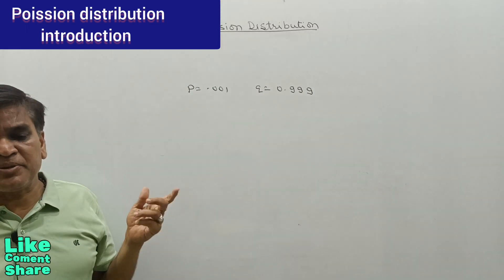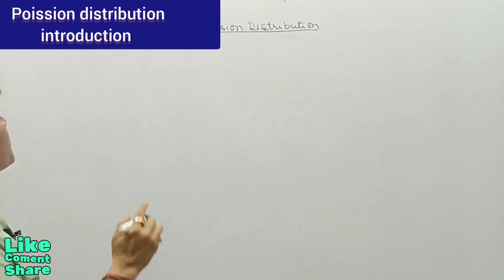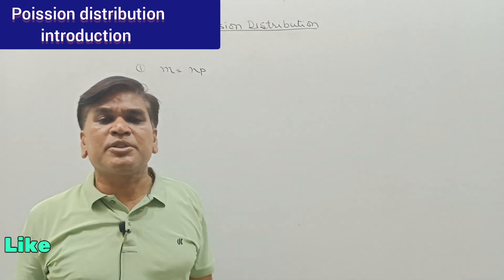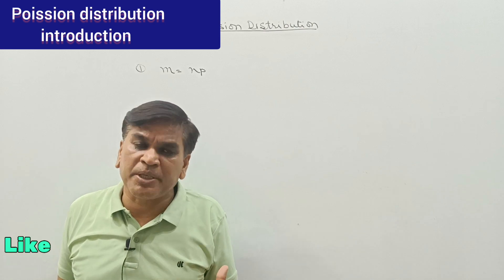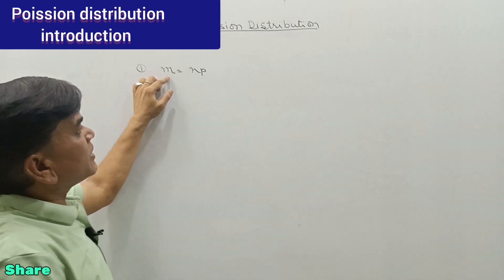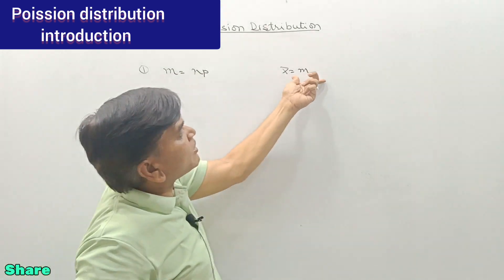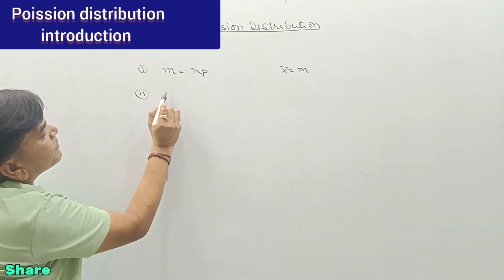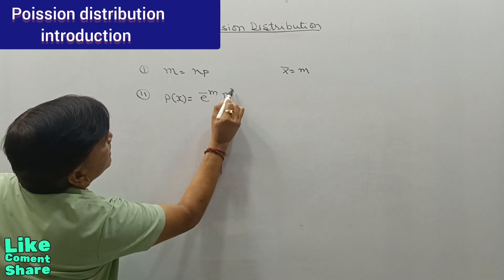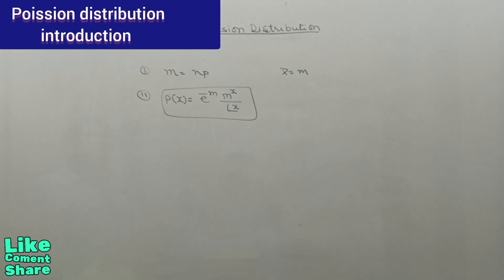There are some terms for Poisson distribution. First, we calculate the arithmetic mean m, where m is equal to n multiplied by p. Using this m, the probability formula for Poisson distribution is: P(x) equals e raised to power minus m, multiplied by m raised to power x, divided by factorial x. This is the formula for the Poisson distribution.